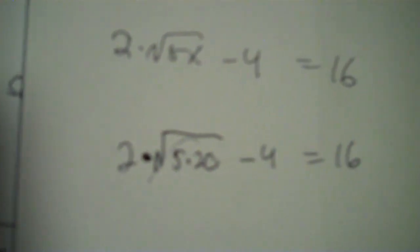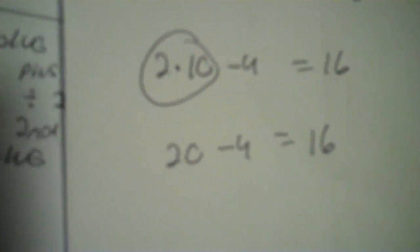Now if you want to check your answer, the original problem is 2 times the square root of 5x, and then 5 times 20 — because x is 20 — minus 4 equals 16. The square root of 5 times 20 is the square root of 100, which is 10. So we have 2 times 10 minus 4 equals 16. 2 times 10 is 20, minus 4 equals 16, and 20 minus 4 is 16. 16 equals 16 — we've got the same number on each side, so it's right.